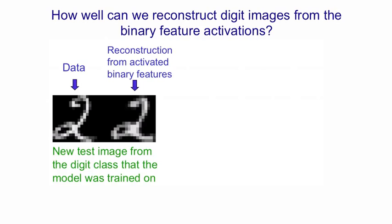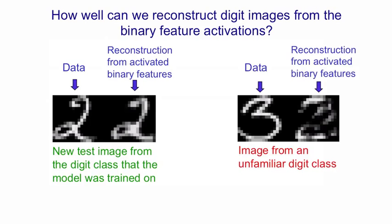A more interesting thing we can do is give it a test example from a different digit class. So if you give it an example of a three to reconstruct, what it reconstructs actually looks more like a two than like a three. All of the feature detectors it's learned are good for representing twos. But it doesn't have feature detectors for things like representing that cusp in the middle of the three. So it ends up reconstructing something that obeys the regularities of a two better than it obeys the regularities of a three. In fact, the network tries to see everything as a two.